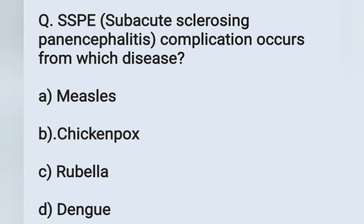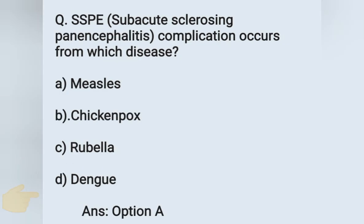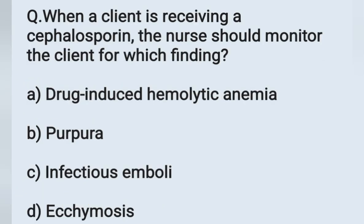Next question: SSPE — Subacute Sclerosing Panencephalitis — is a complication occurring from which disease? Option A: measles, option B: chickenpox, option C: rubella, option D: dengue. Subacute Sclerosing Panencephalitis is one of the complications of measles. Option A is the correct answer.